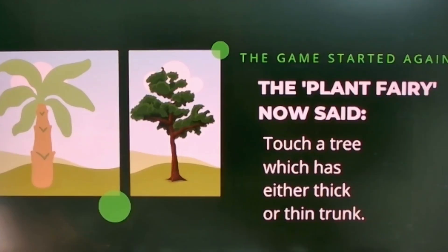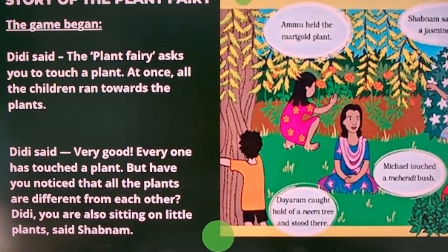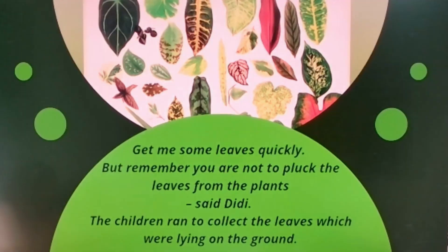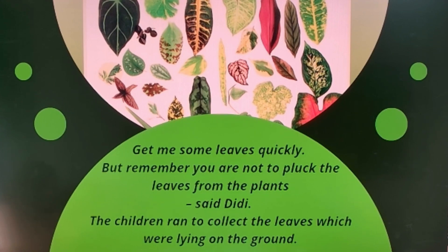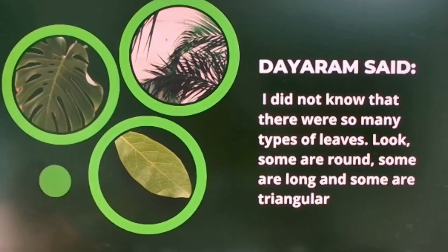Dili had started giving instructions playing the plant fairy game, and now it is Michael's turn. Michael ordered: 'Get me some leaves! But remember, you are not to pluck the leaves from the plants.' The children ran to collect the leaves which were lying on the ground, and they collected different types of leaves.